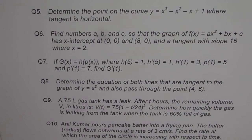Find the numbers a, b and c so that the graph of f(x) equals to ax² plus bx plus c has x intercept at (0, 0) and (8, 0) and a tangent with slope 16 where x equals to 2.